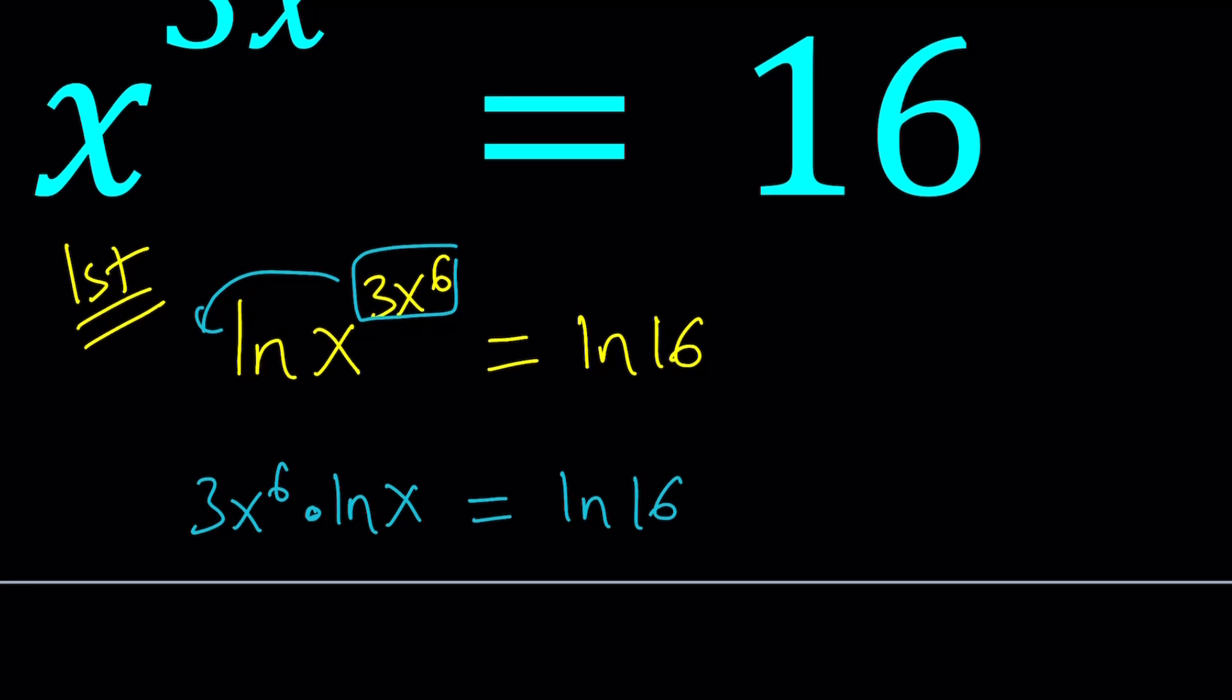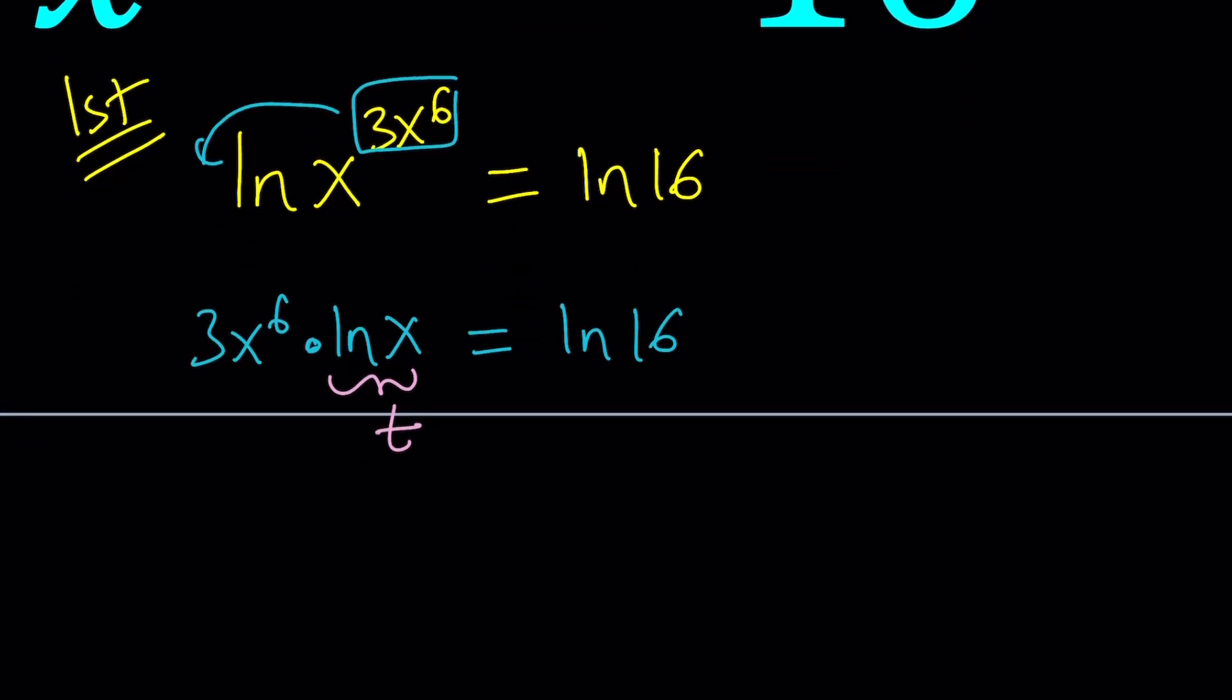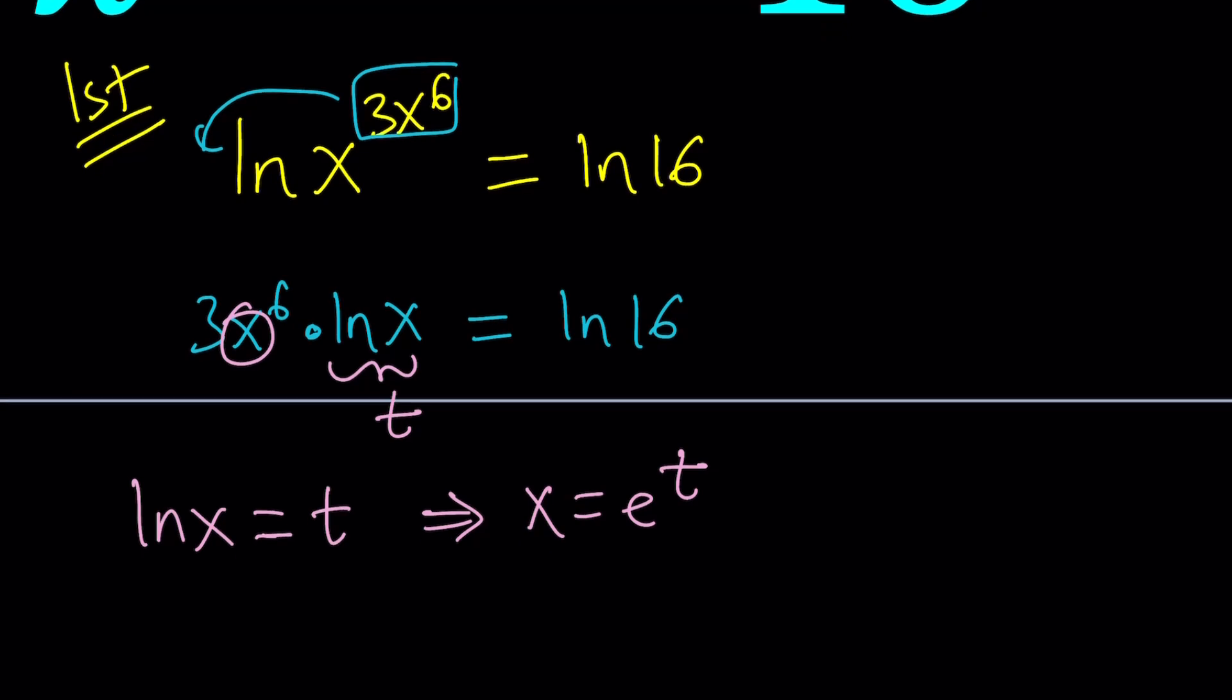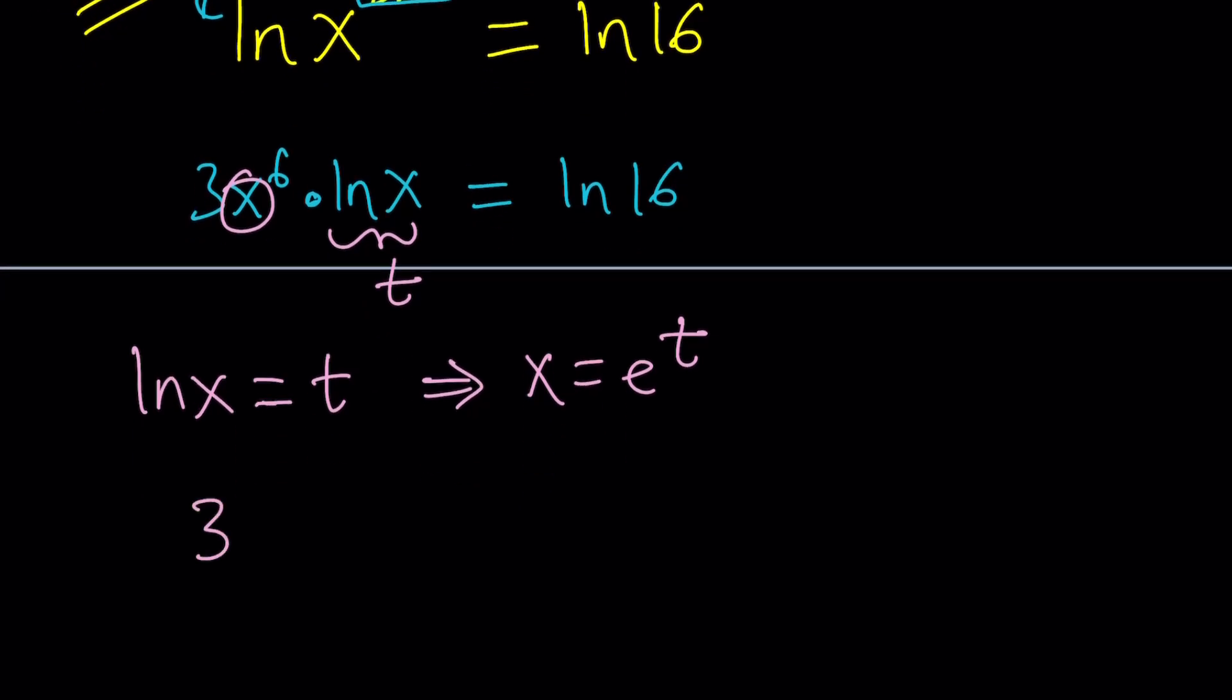You can use any variable you want, but I like t. So if you set lnx equal to t, then from here by definition, x would be e to the power t. And we can go ahead and plug it in, but that will be raised to the sixth power. So it's going to be 3 e to the sixth t multiplied by t equals ln 16.